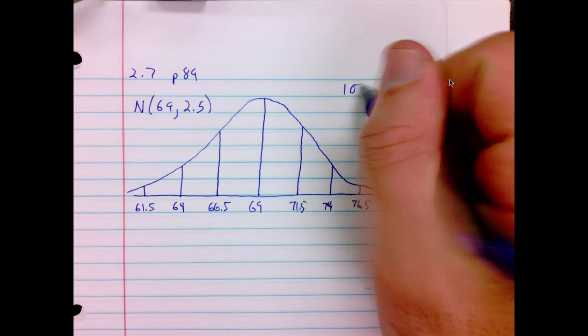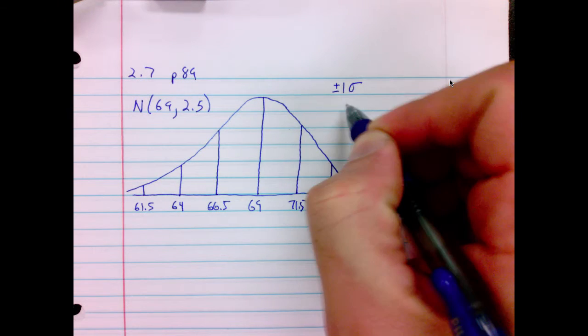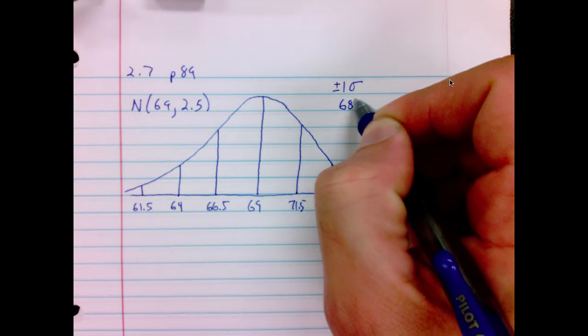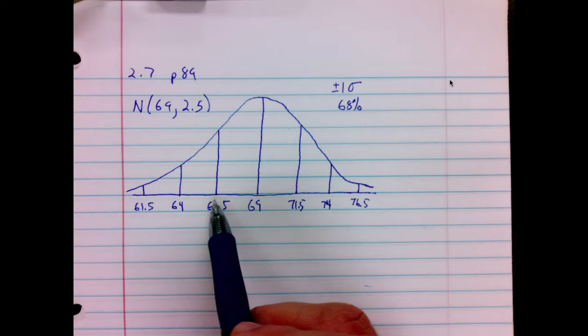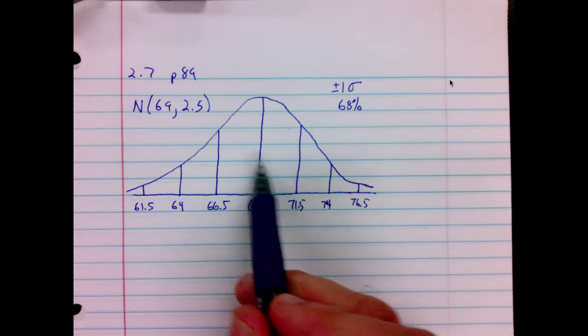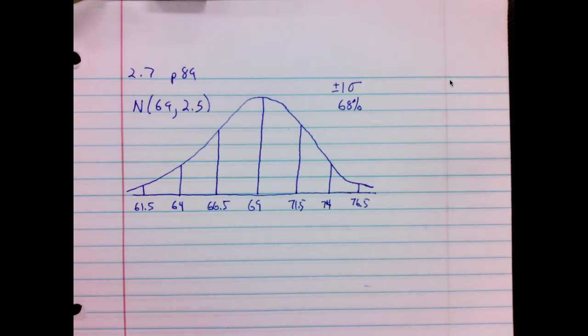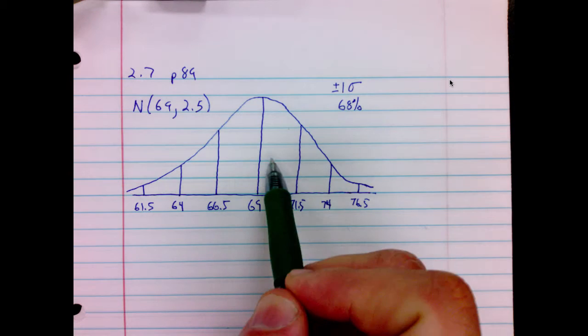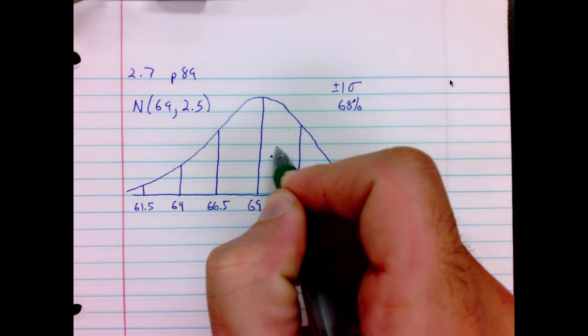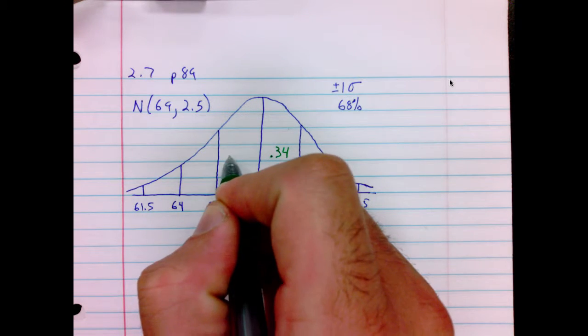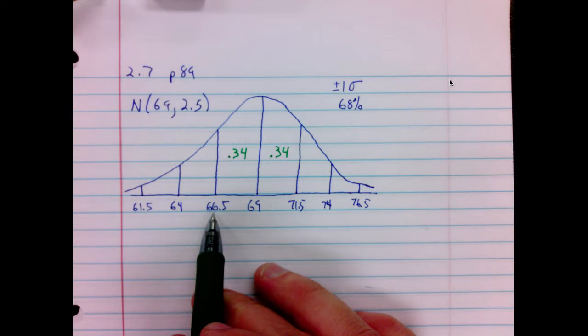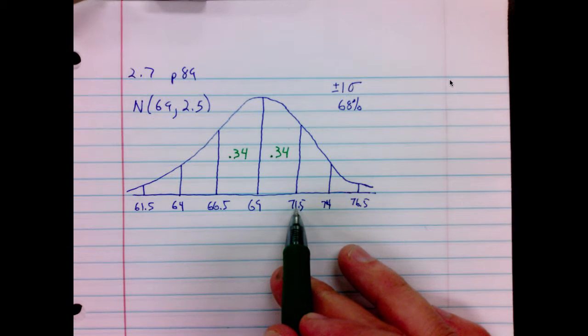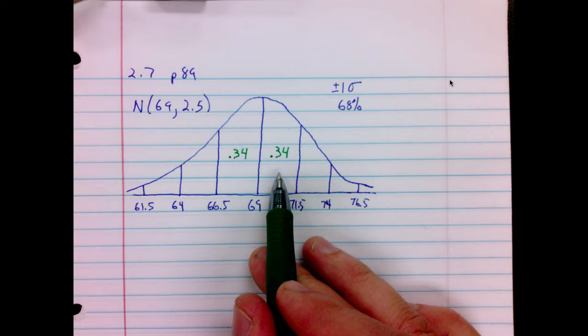The empirical rule states that in one standard deviation, plus and minus, we will have 68% of our observations. That is to say, from 66.5 to 71.5, 68% of the observations will lie. And since it is symmetric, half will be above (34%) and half will be below (34%). So from 66.5 (five foot six and a half) to 71.5 (five eleven and a half), 68% of adult American men are that height.